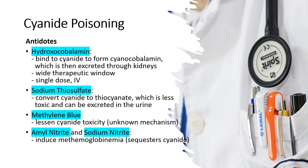Methylene blue is an alternative antidote that can lessen cyanide toxicity by re-establishing oxidation-reduction equilibrium and calcium channel activity. Methylene blue is administered intravenously and should be used cautiously in patients with G6PD deficiency, as it can induce hemolysis in these individuals.